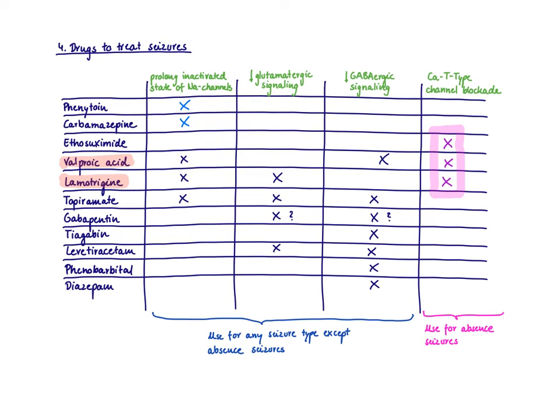And last, I would just remember the drugs like valproic acid and lamotrigine that do a lot of different actions, including the calcium T-type channel blockade. So you could use it for any seizure, including absence seizures. So these are our broad spectrum anti-seizure medications.